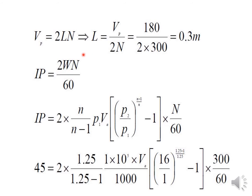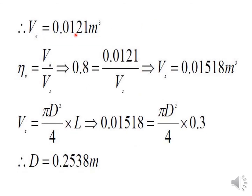Next, the indicated power formula: IP = (2n/(n−1)) × p1 × Va × [(p2/p1)^((n−1)/n) − 1] × (N/60), where Va is the actual volume of air supplied at inlet pressure. IP, n, p1, p2, and N are all known, so the only unknown is Va. Solving gives Va = 0.0121 cubic meters.